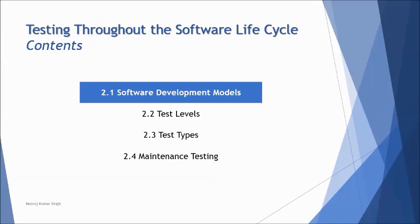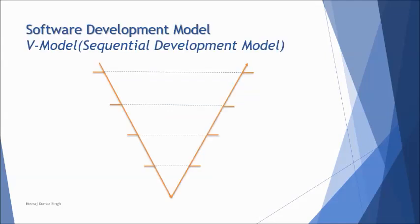In this tutorial we will be studying 2.1, that is software development models. The first thing to understand is how software development models work and how testing should be practiced. Generally we have different methodologies, and ISTQB has something specific to convey about what basic characteristics a good testing practice must have. With the help of the V-Model we will try to understand these characteristics.